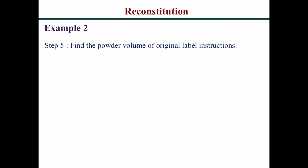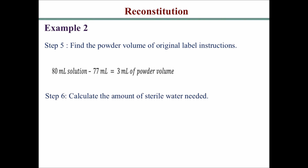Next, find the powder volume from the original label instructions: 80 milliliters of solution minus 77 ml of sterile water gives you 3 ml of powder volume. Then calculate the amount of sterile water needed: the total volume of 250 ml minus the 3 ml powder volume gives you 247 milliliters.